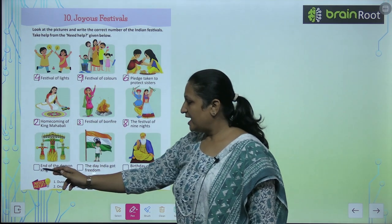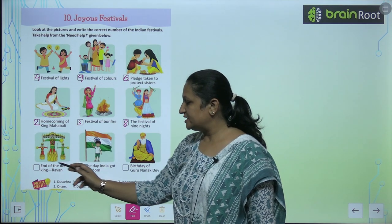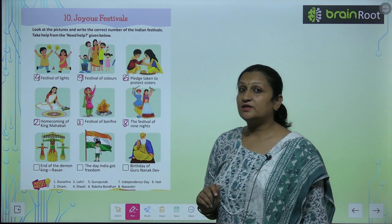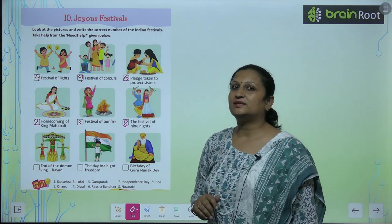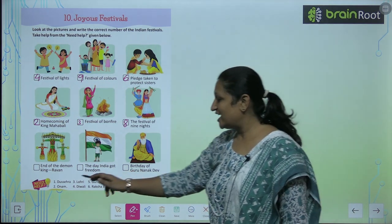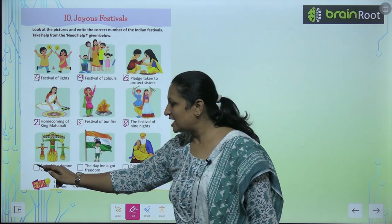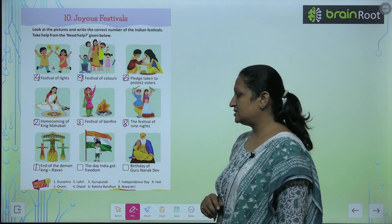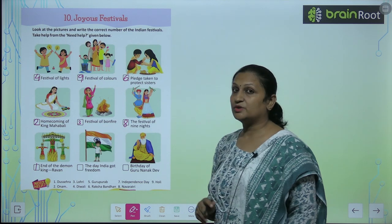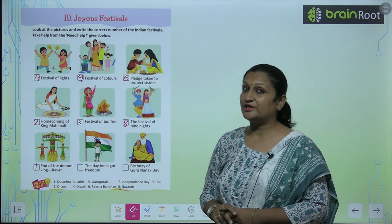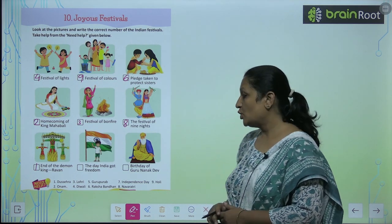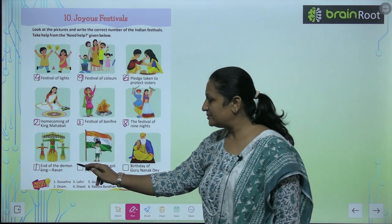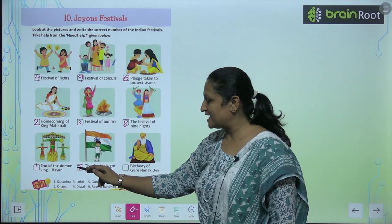Children, see the next. End of the demon king Ravan. Aisa kaunsa festival hai jis mein Ravan ka anth hua tha? That is Dussehra. So you will write number 7 here.